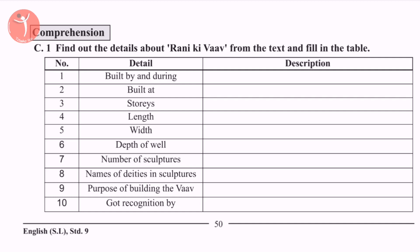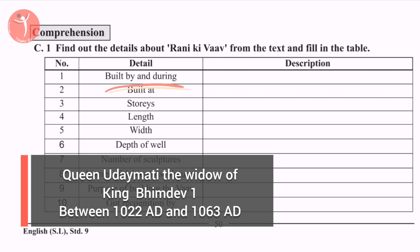Comprehensive activity number 1: find out the details about Rani ki Vav from the text and fill in the table. The first point is 'Built by and during'. It was built by the widow of King Bheemdew 1.